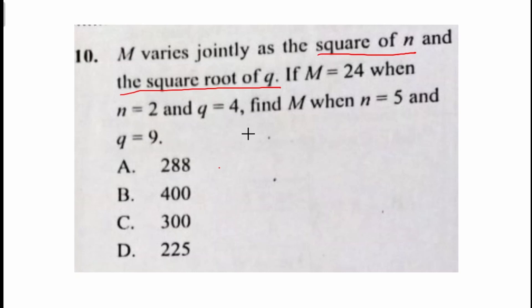So the relationship is going to be M varies as the square of n and then the square root of q. Then by introducing equal to sign, M equals, we introduce our own k which is a constant of proportionality multiplying n squared and then the square root of q. Then now we substitute these values appropriately.